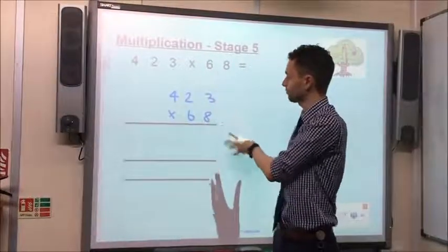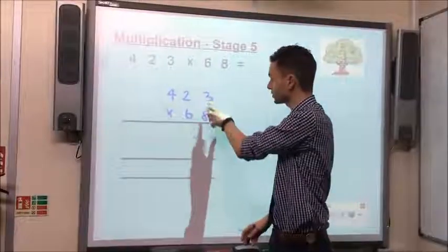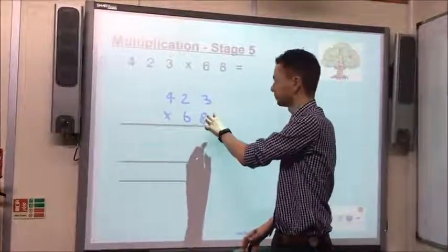So we've got 423 multiplied by 68. We start with this one here, the 8, 8 ones, that is our starting point.